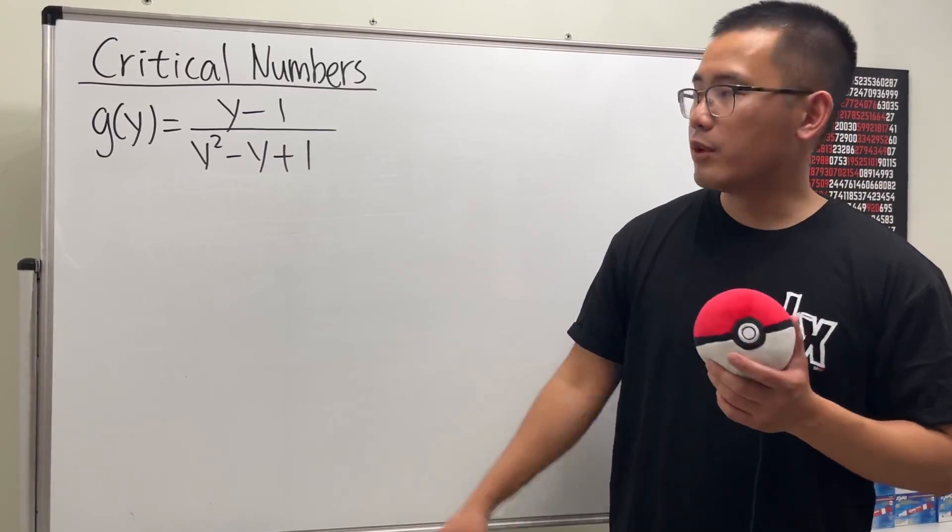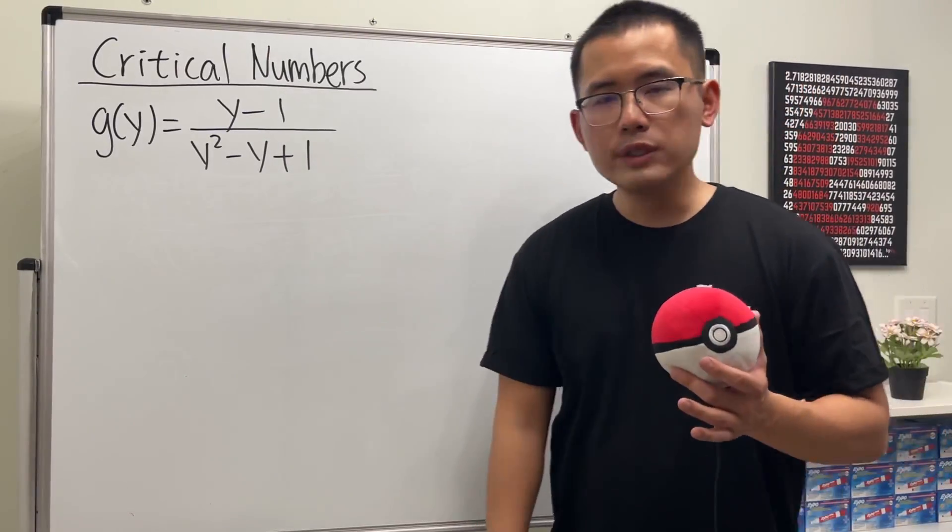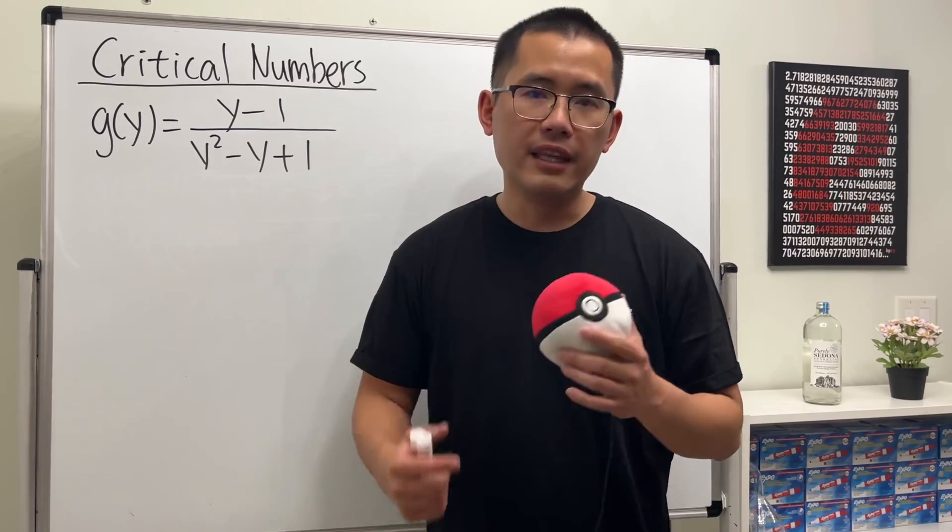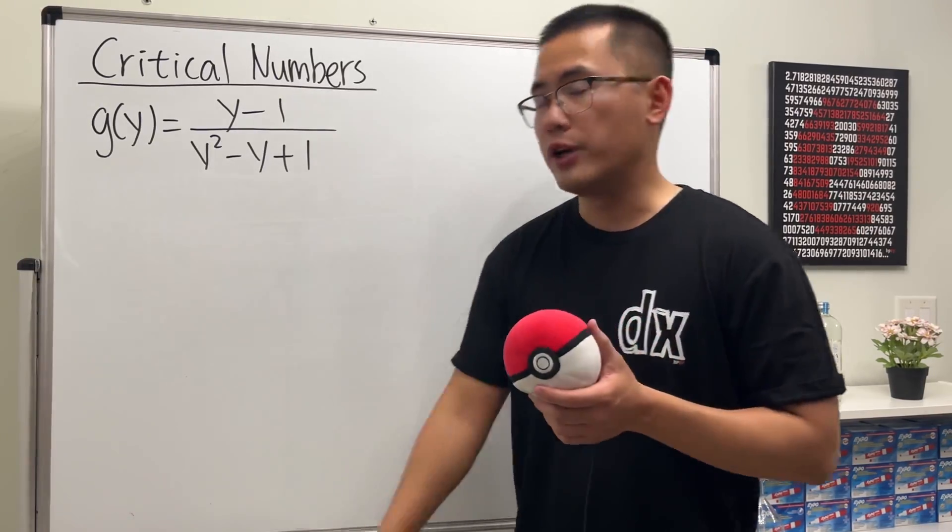Okay, we are going to find the critical numbers for this function here. And of course, we start by taking the derivative first, and then set it equal to zero, and then solve the equation.